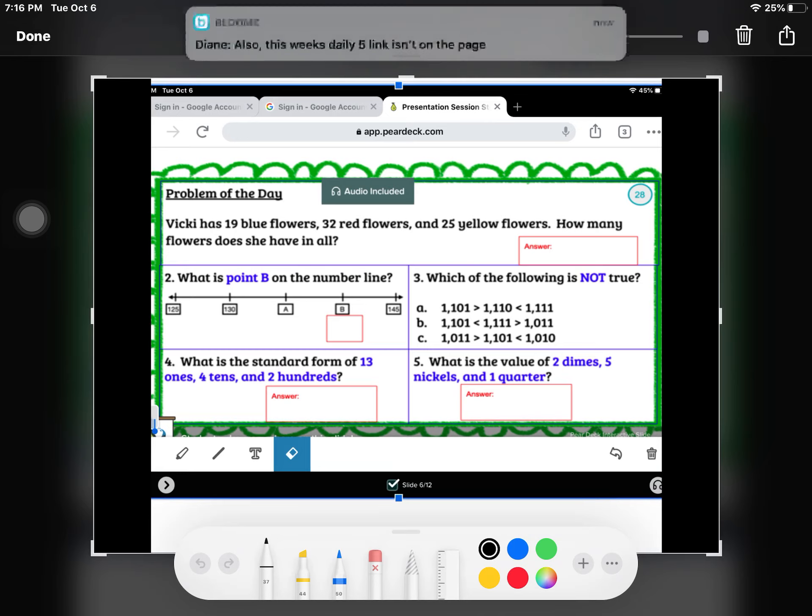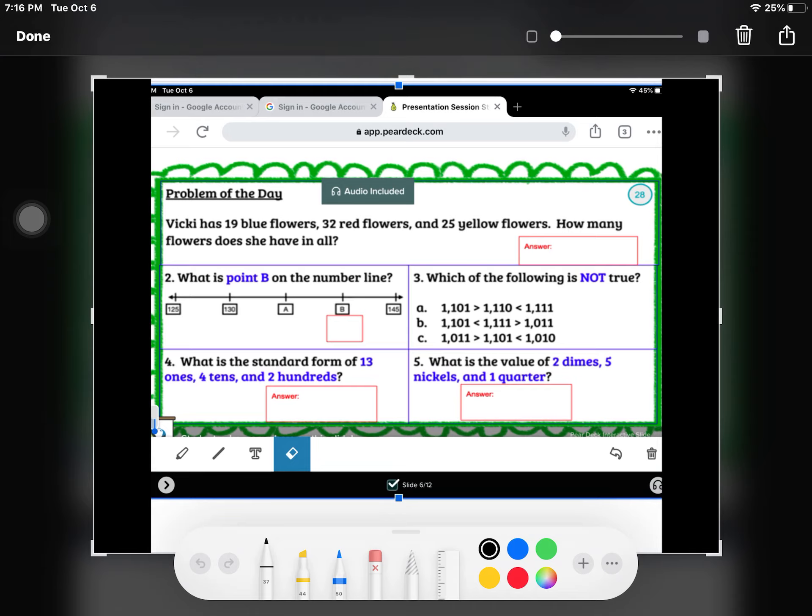If we look at it, we can tell that it's counting by five. So 125, 130, 135 is A, and 140 is B, and the last number is 145.